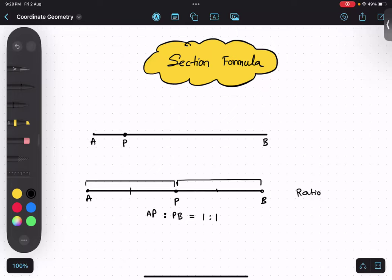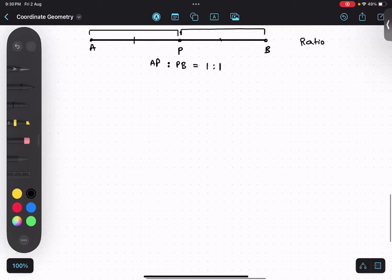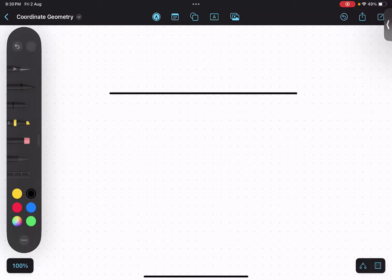So section formula's basic thing is to find out what is the ratio m is to n. This is a major concept. When we are learning this, let me just give you the formula. Let's say this is point P, m is to n. This point is the first point so we write x1, y1. This point is the second point x2, y2. And this is the point which is in the middle somewhere, so we write it as x comma y.